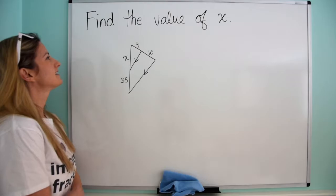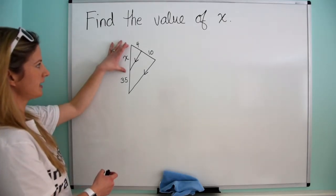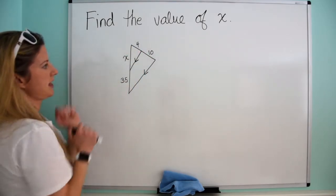Let's try this problem. Find the value of x. We have a triangle here and we know that this segment is x, this is 35, this is 4, and this is 10.